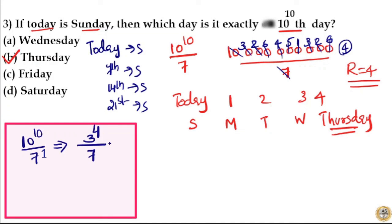So 3 raised to 4 is the numerator. Now this is 81 by 7. So 81 by 7 gives you remainder 4.